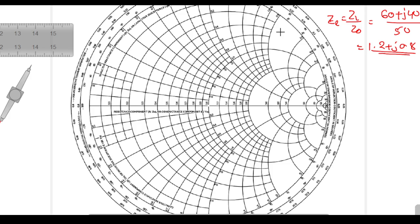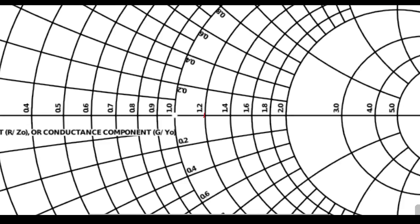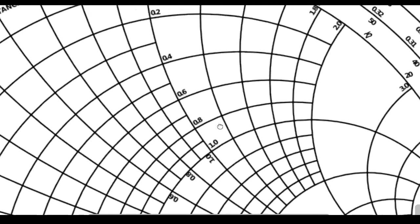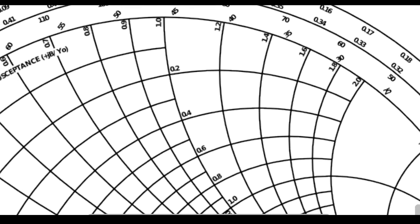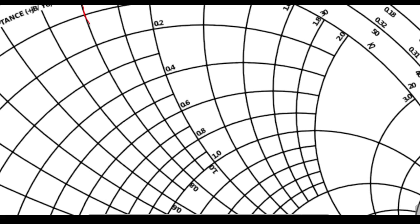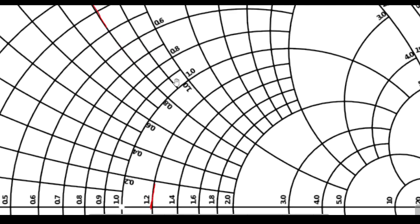We need to represent this point on the Smith Chart first, then proceed further. To represent this point I need to find the resistance circle of 1.2 and the reactance circle of 0.8. I will zoom in here — you can see this circle represents r = 1.2, and 0.8 is this circle. We need to see where these two circles meet each other, and that is the required ZL point.